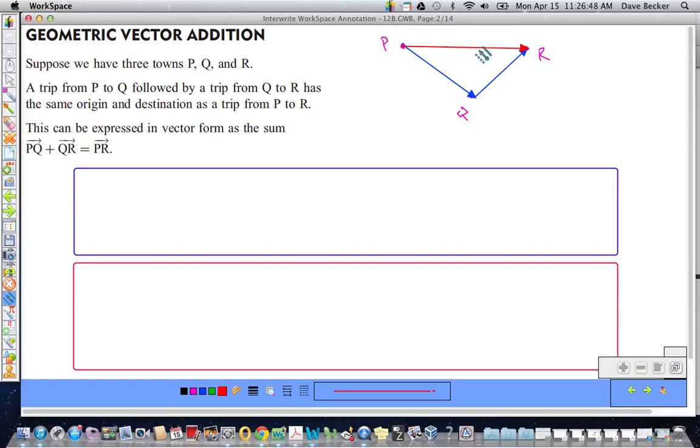The displacement is the magnitude of the vector PR, even though we didn't go that particular route. Now, the important thing is we've just learned about the addition of vectors, and that is that PQ plus QR is equal to PR.